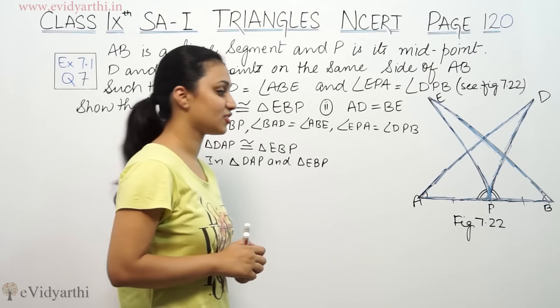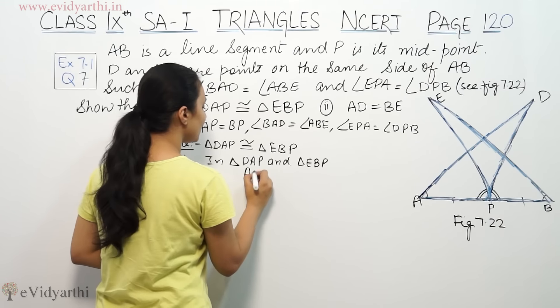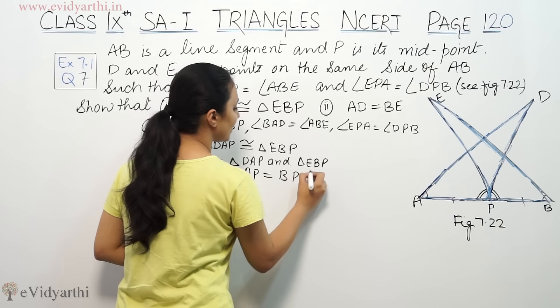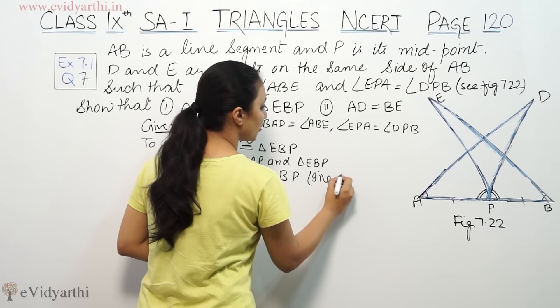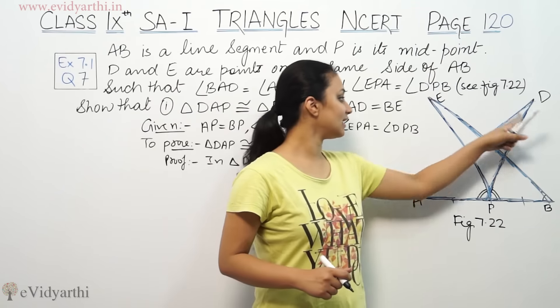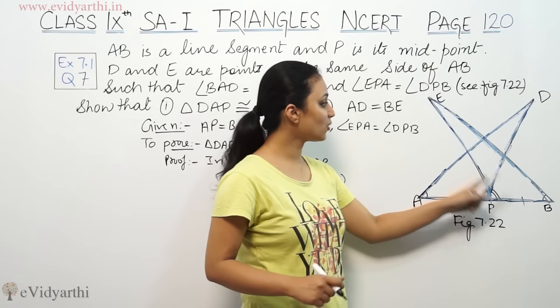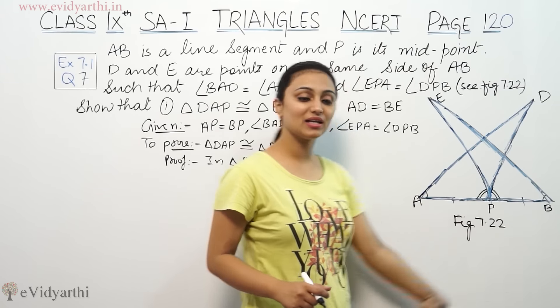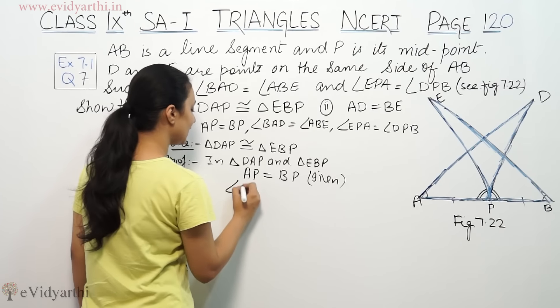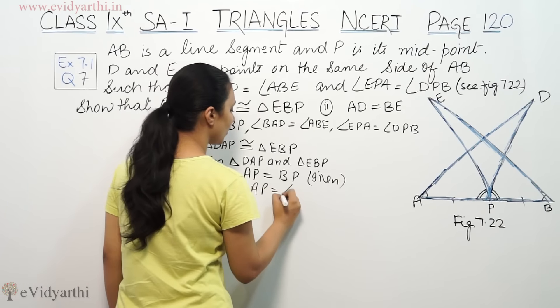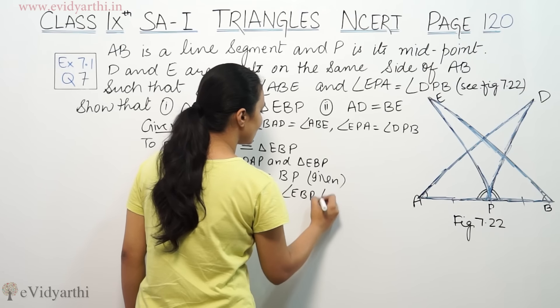We can try this way. In the triangles, AP is equal to BP, this is given. The other thing we can say is that angle DAP is equal to angle EBP. This is given.